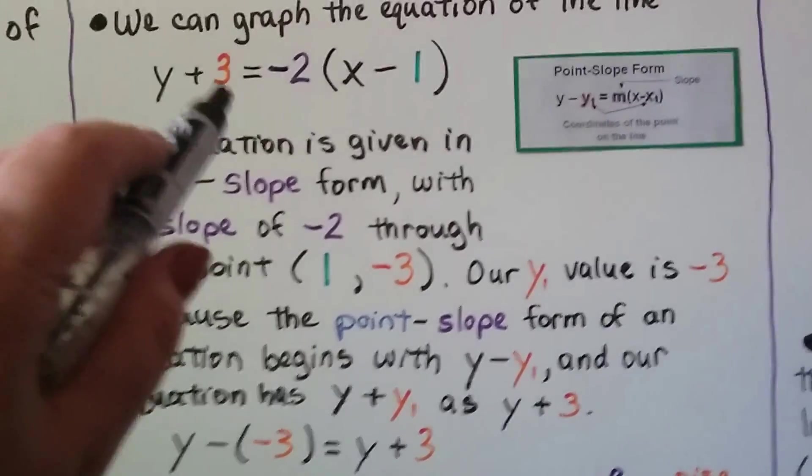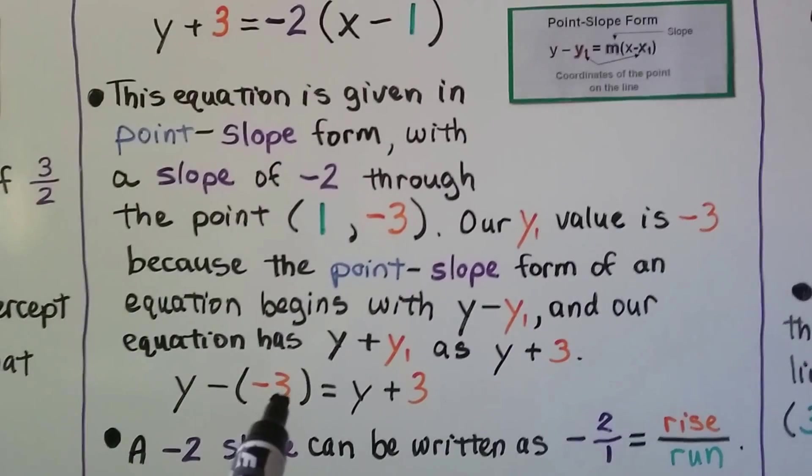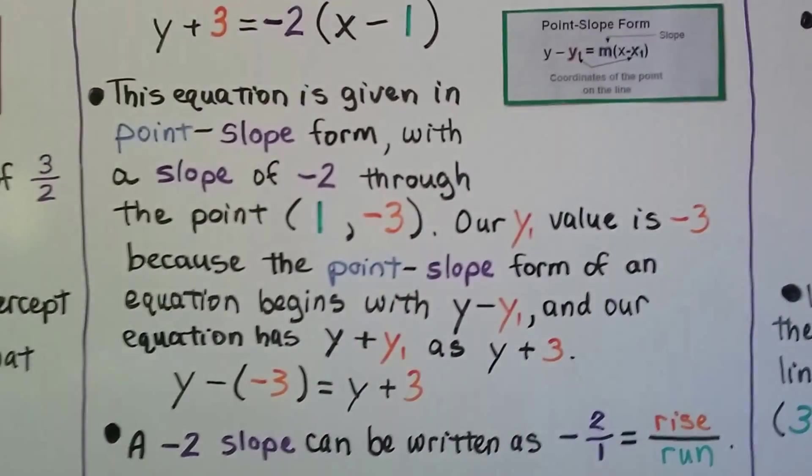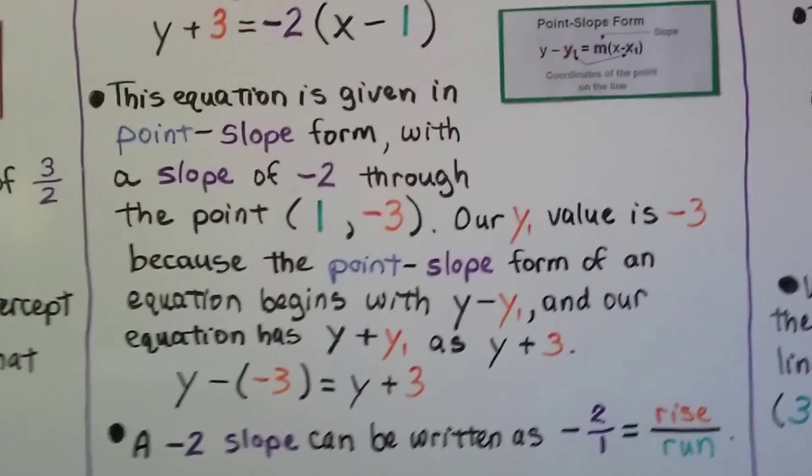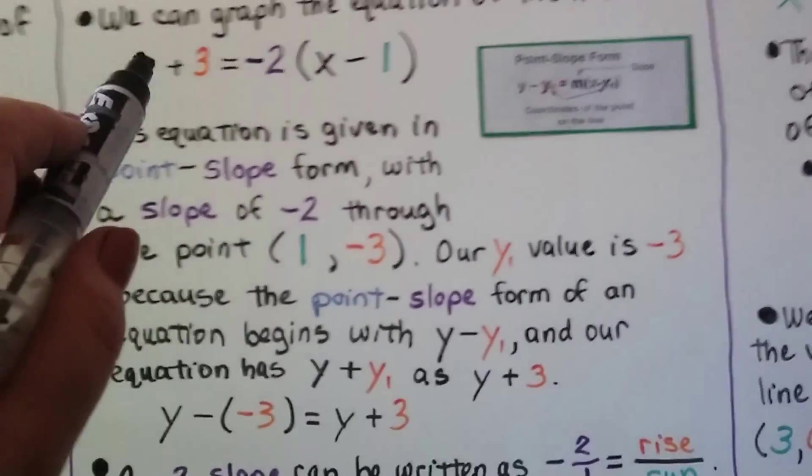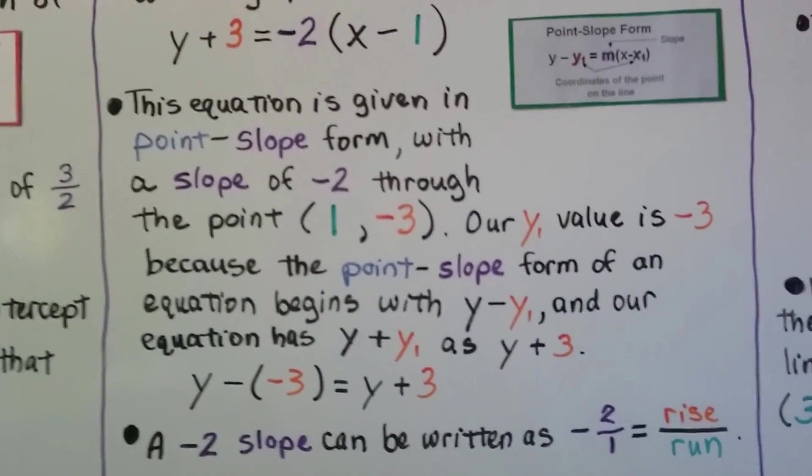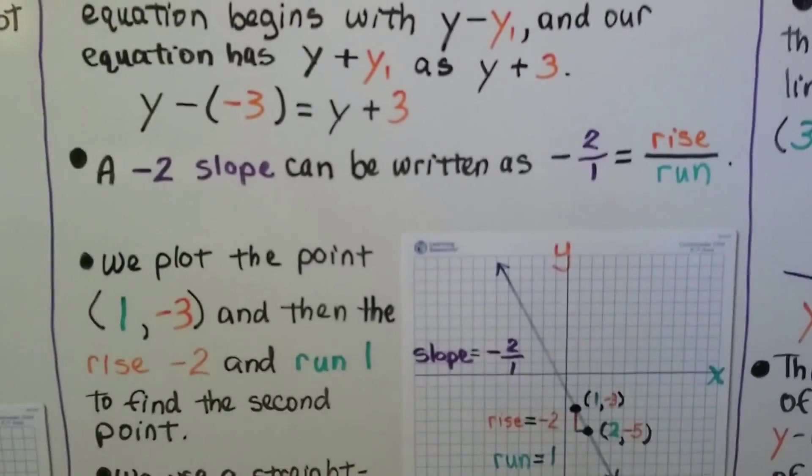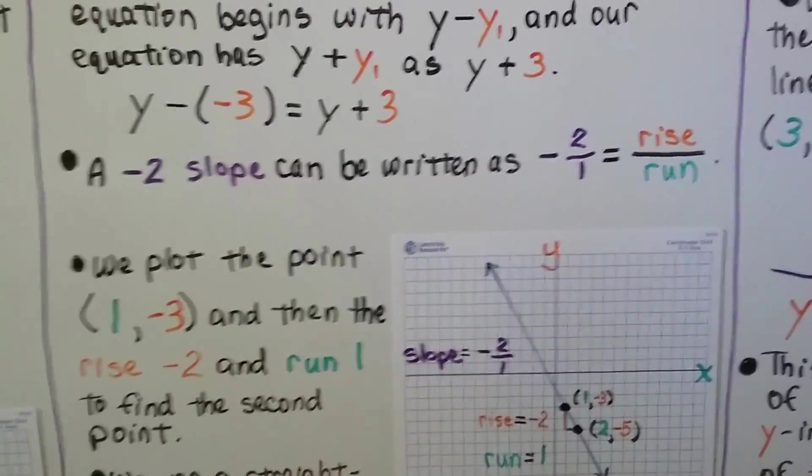See how it says a positive 3? Well, in its ordered pair, our value is going to be a negative 3 because the point-slope form of an equation begins with y - y₁. Our equation has y plus a y₁ as y + 3. So how did we get to this positive 3? If we have a negative 3 for our y value, then we'll have y minus a negative 3. When we're subtracting a negative, we add the opposite and that's how it got to y + 3. A negative 2 slope can be written as -2/1 so that we can have our rise over our run.